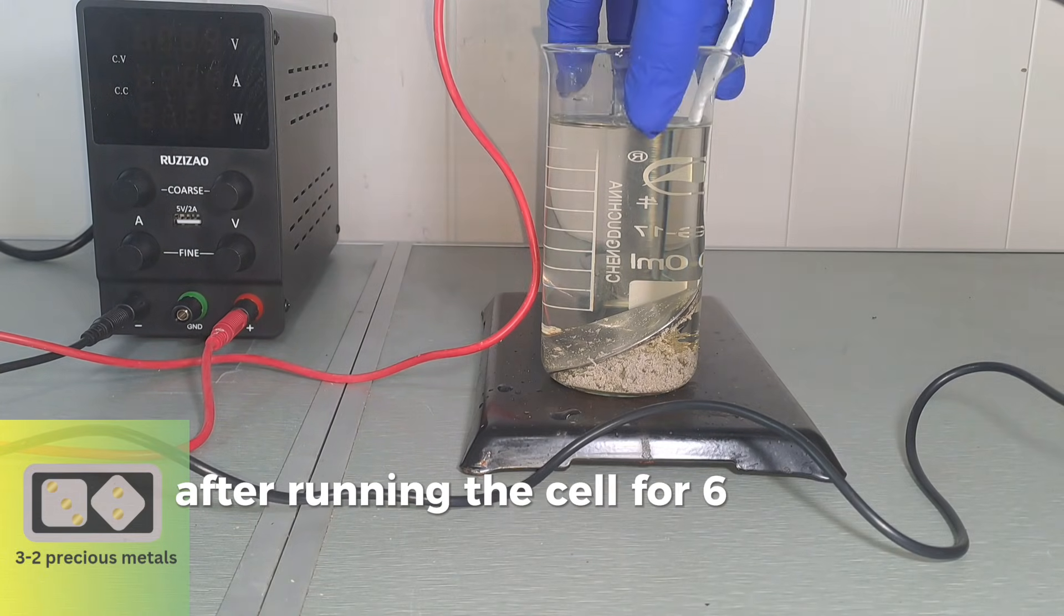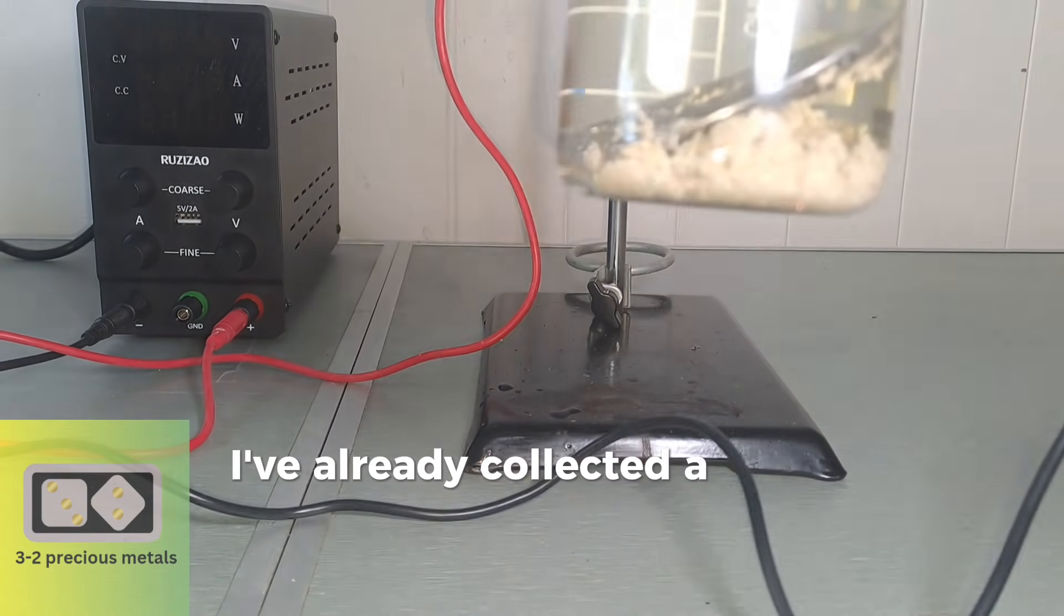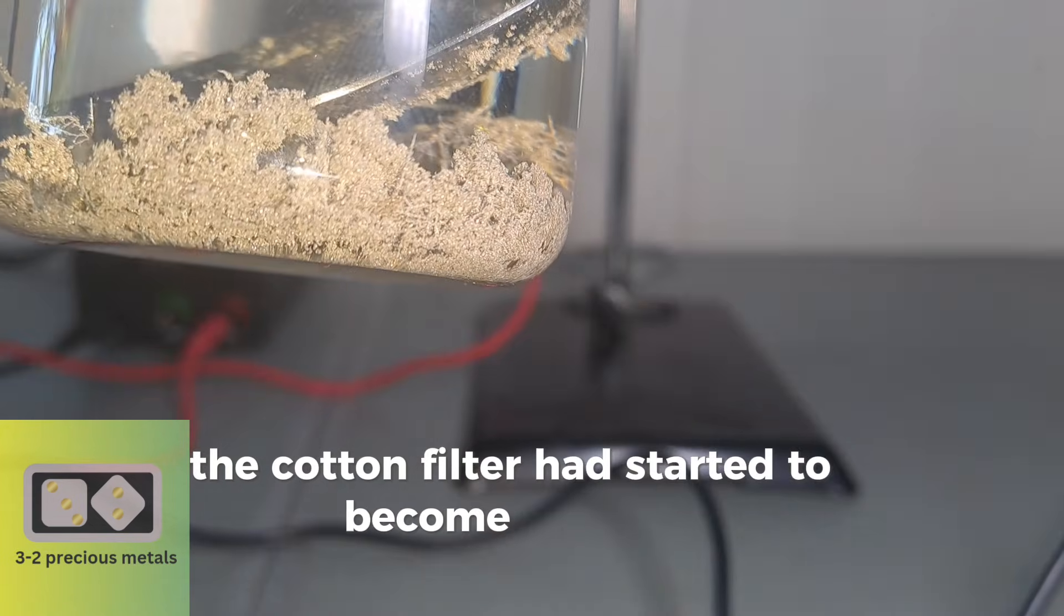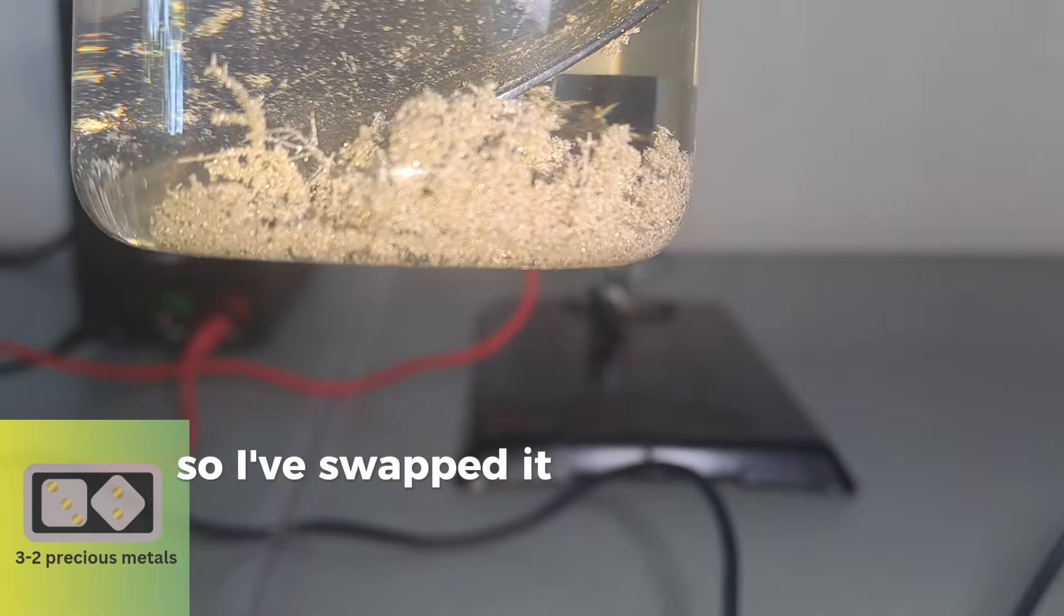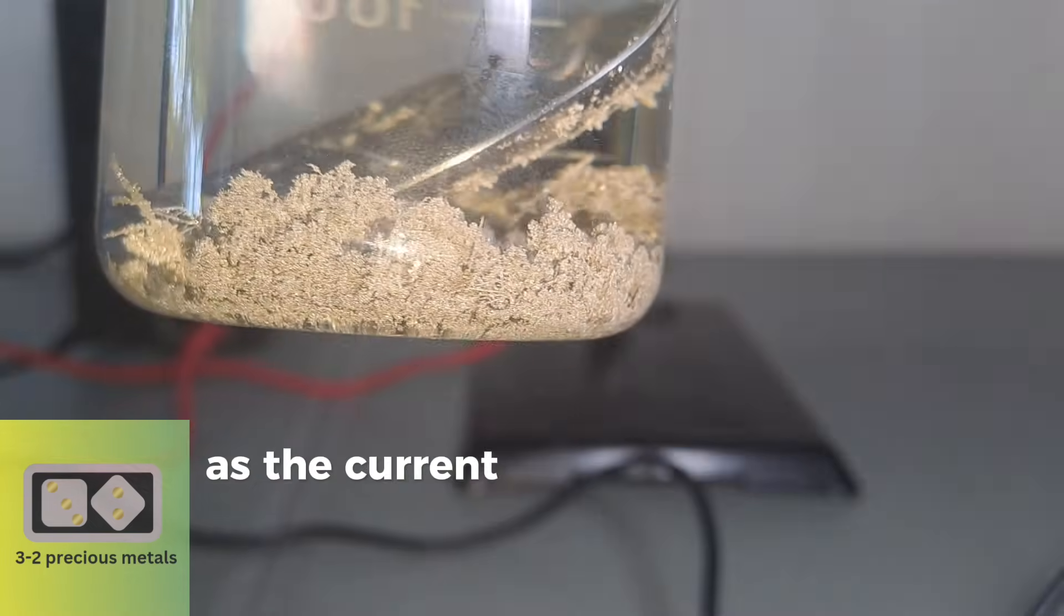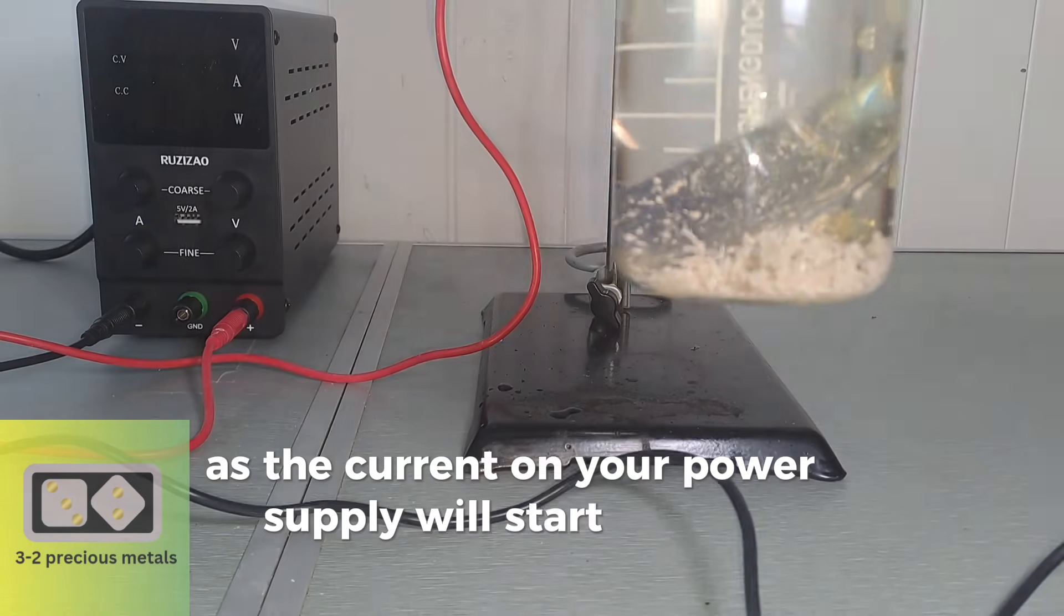After running the cell for 6 hours, I've already collected a fair amount of crystals. The cotton filter had started to become clogged, so I've swapped it out for a new one. You'll know when the filter is clogged as the current on your power supply will start to drop.